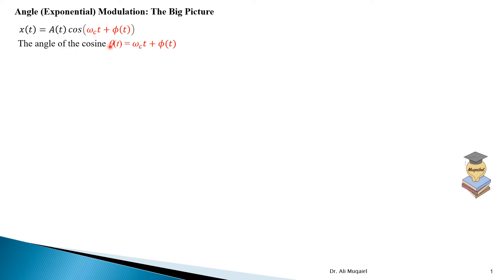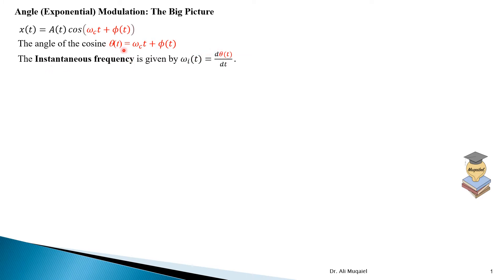What you see here in red is the phase of the signal, and it's related to the instantaneous frequency. The instantaneous frequency is the derivative of the phase. Or, if you like, the phase is the integration of the instantaneous frequency.